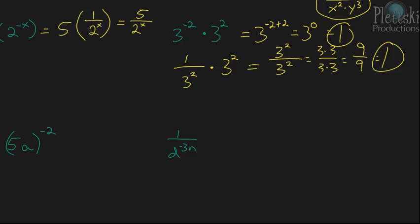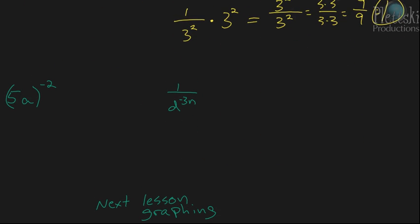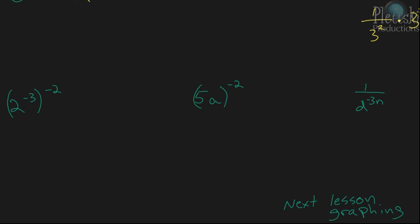The next example: 2 to the negative 3rd power, raised to the negative 2 power. One of the exponent rules says when you have a power raised to a power, all you do is multiply the two exponents. So, we have 2 raised to the negative 3 times negative 2. Negative 3 times negative 2 is positive 6, so it's 2 to the 6th power, which equals 64.